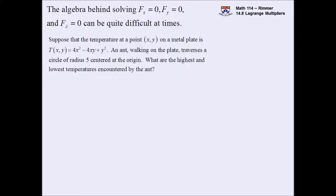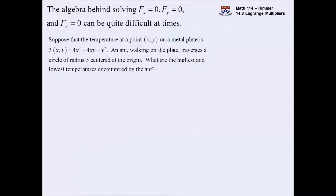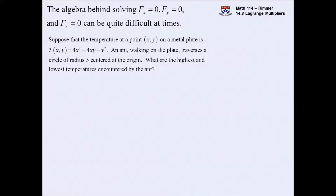Suppose that the temperature at a point on a metal plate is measured by the formula 4x² - 4xy + y², and there's an ant walking on the plate stuck on a circle of radius 5 centered at the origin. As this ant walks around, it experiences different temperatures from this multivariable function based on its x and y position. The question is: what is the highest temperature and the lowest temperature encountered by the ant? This comes straight out of an old final exam question.